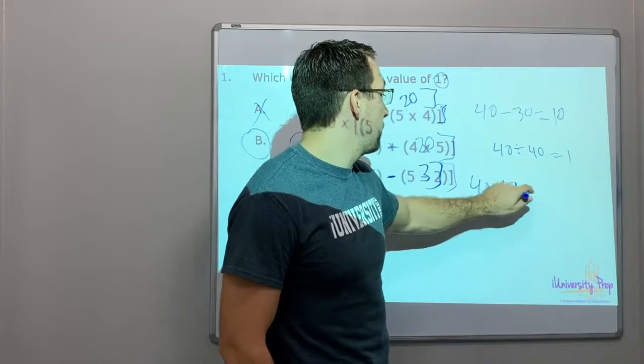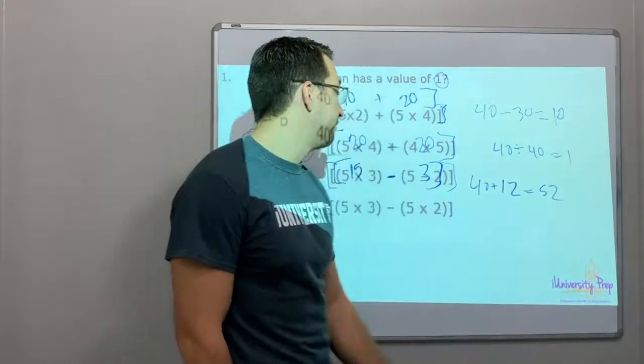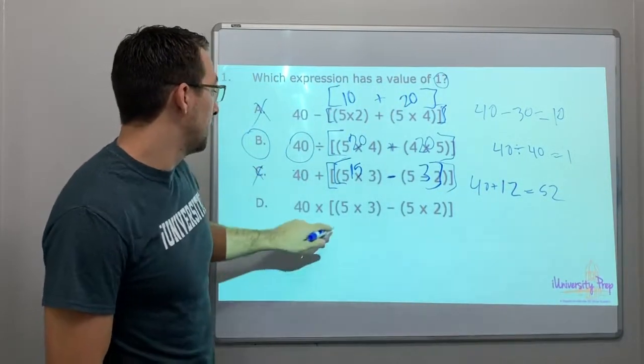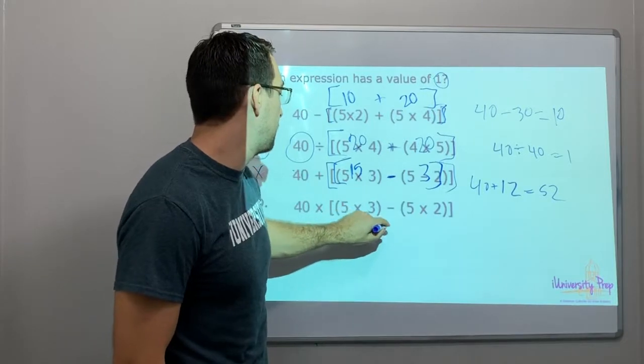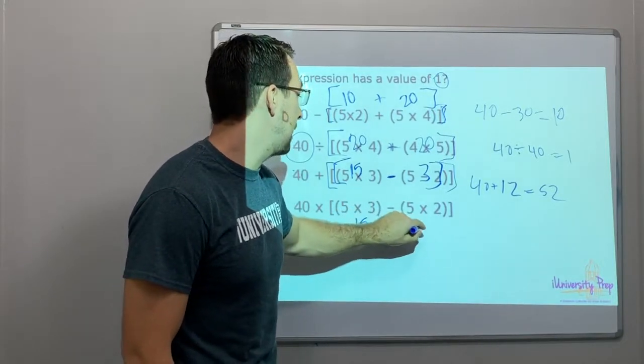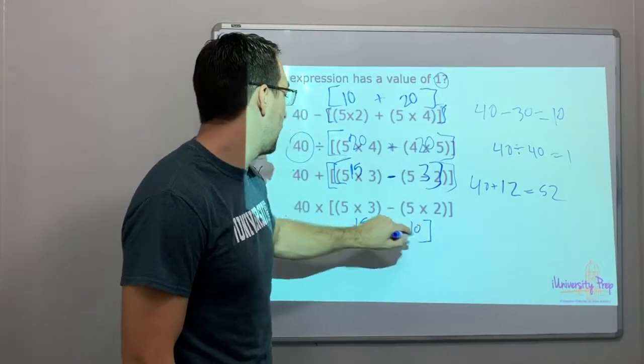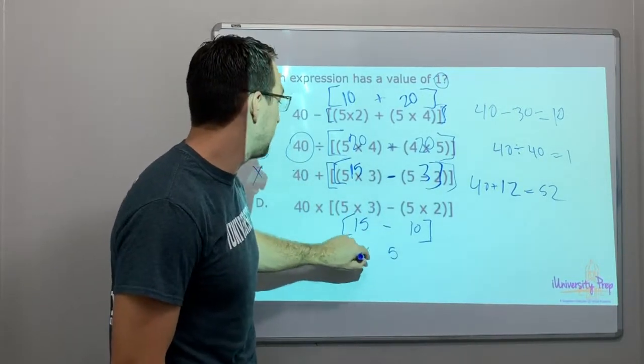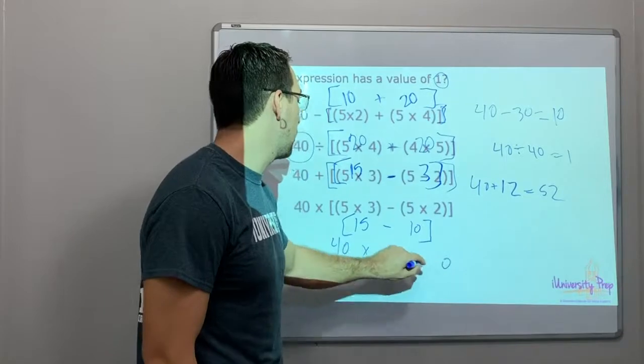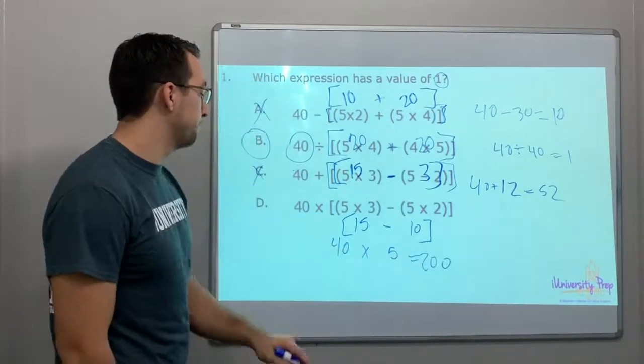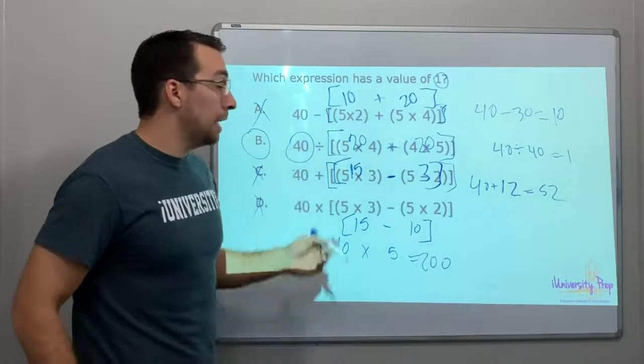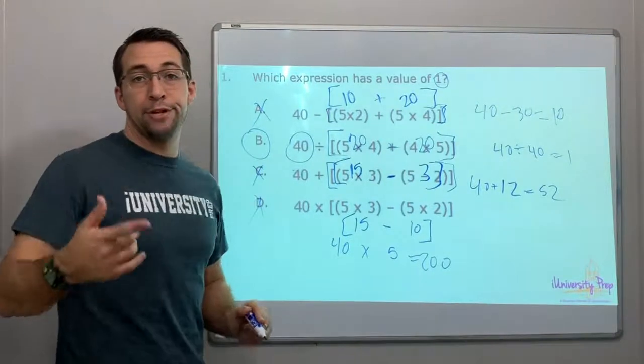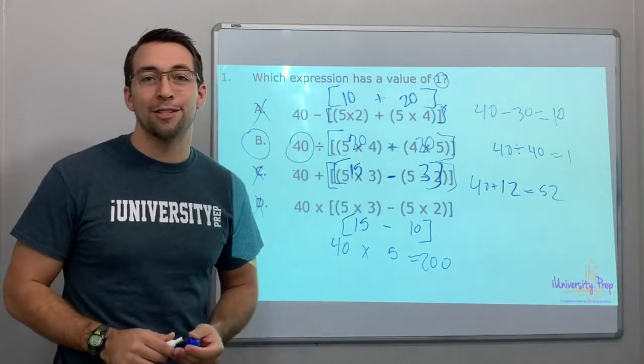40 plus 12 equals 52. That's not it. Alright, so this is 15 minus 10. And then here's our bracket, so that's 5. 40 times 5 is 200. Okay, not it guys. This is a video - tune in to the next video for the next set of questions. Thanks so much!